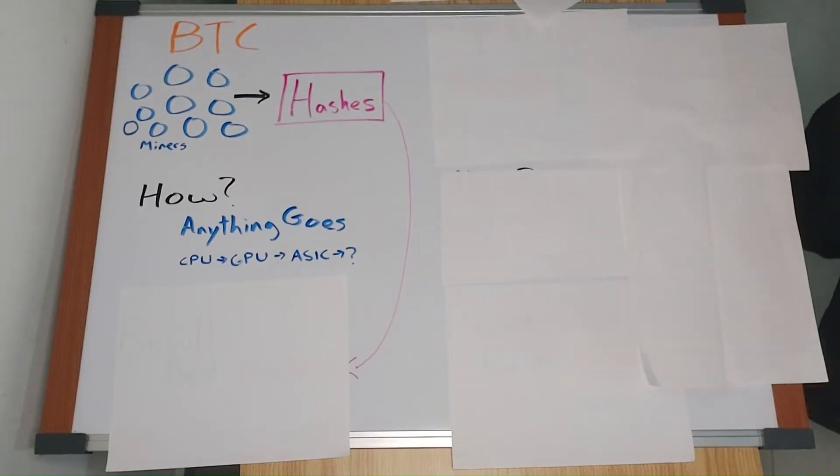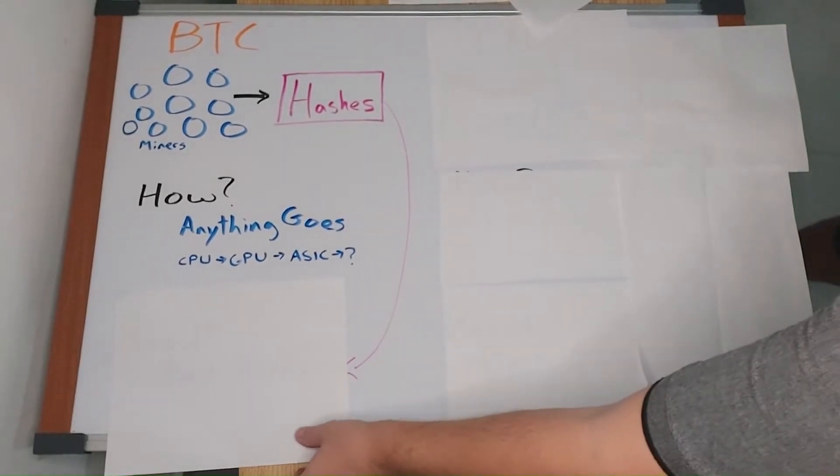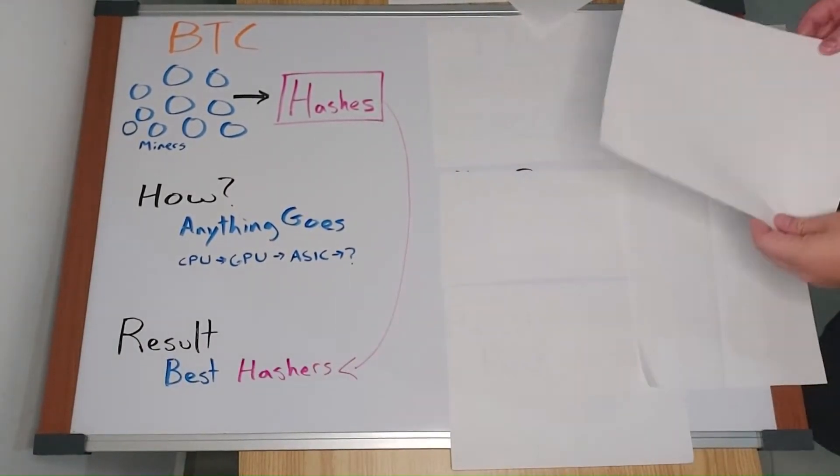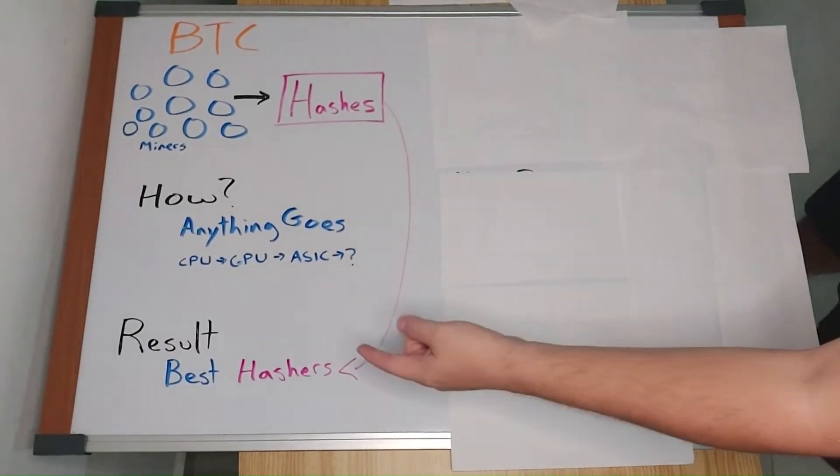Bitcoin produced an incentive to find the best way to possibly guess these numbers, ASICs. And it will probably continue to improve upon that best way. The result? Bitcoin has found the best way to guess hashes.